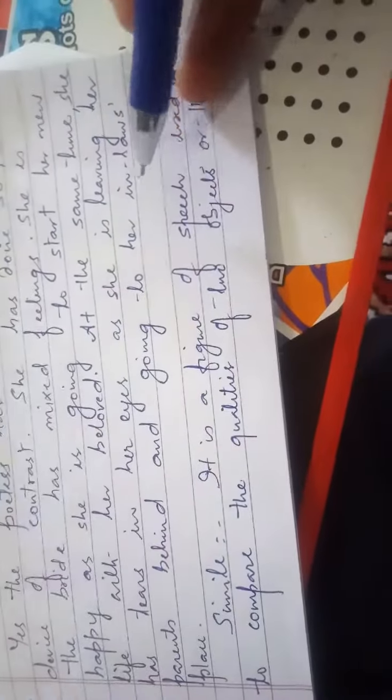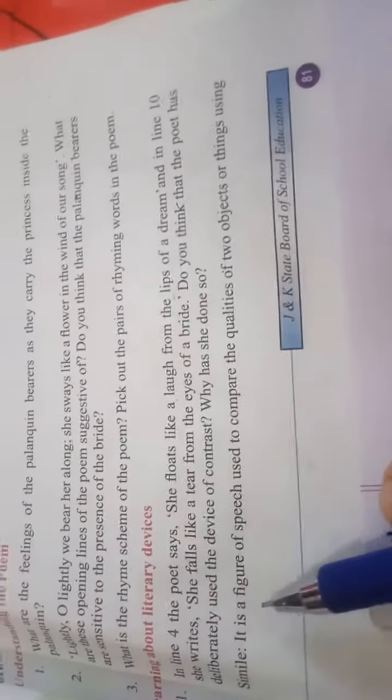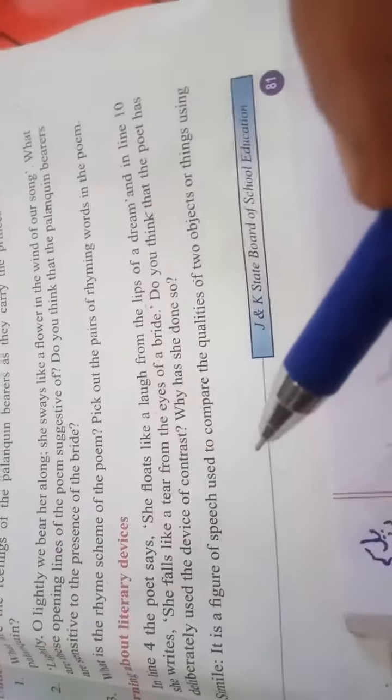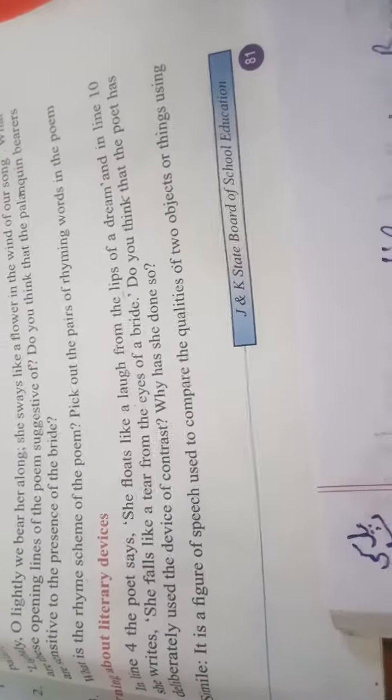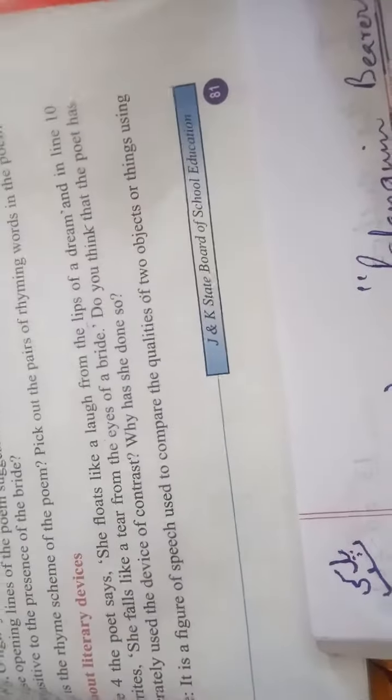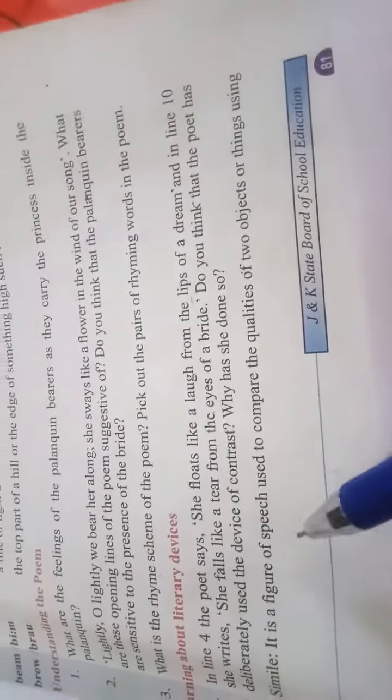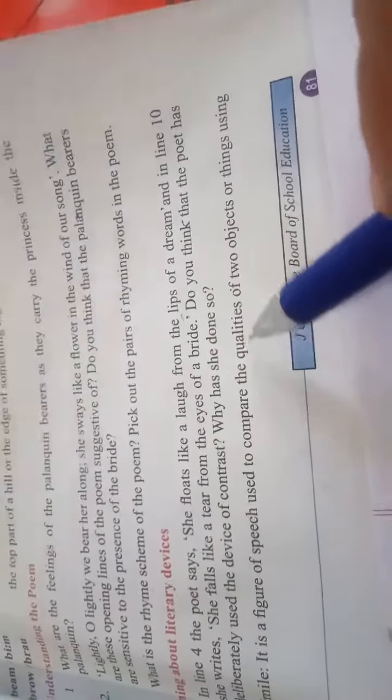The next literary device is simile. So what is simile? Simile is basically the comparison when you compare a person with something. He is as poisonous as snake. So he is not a snake but as poisonous as snake, this possibly.